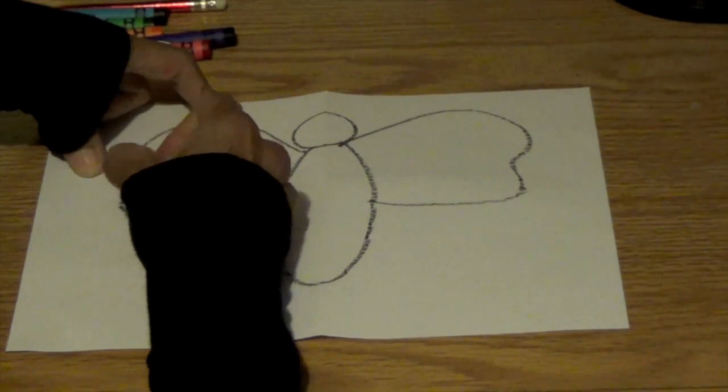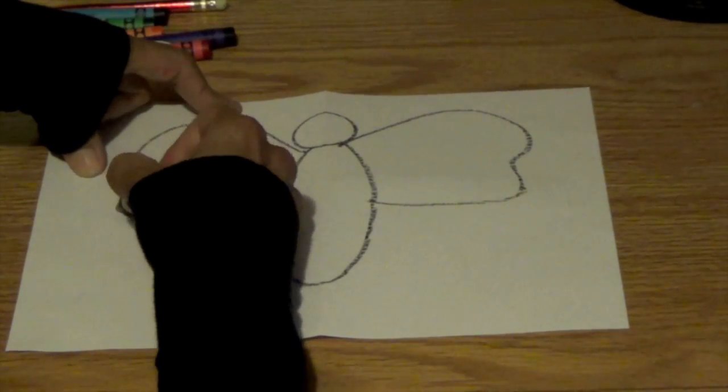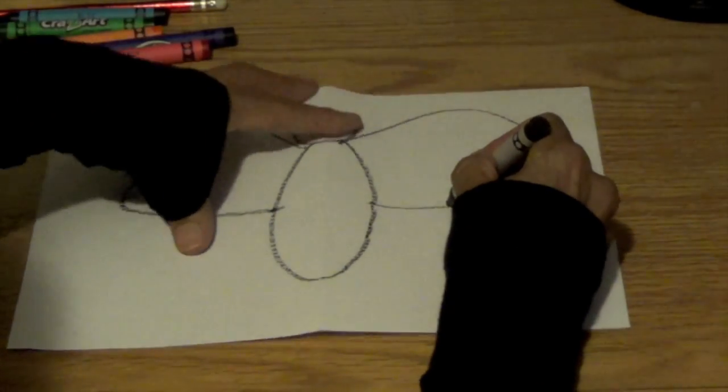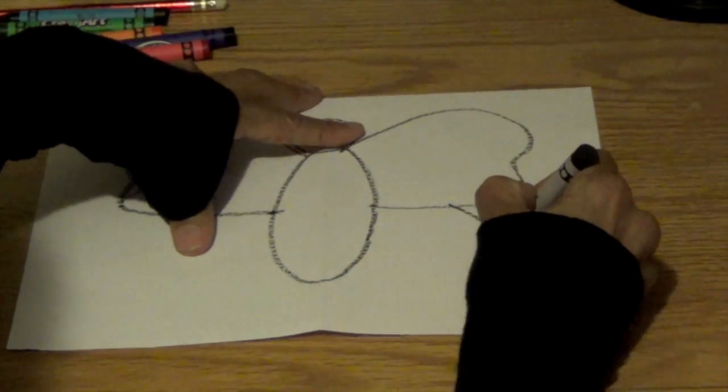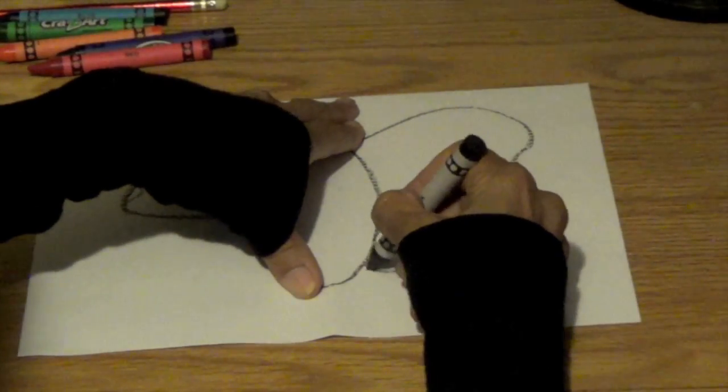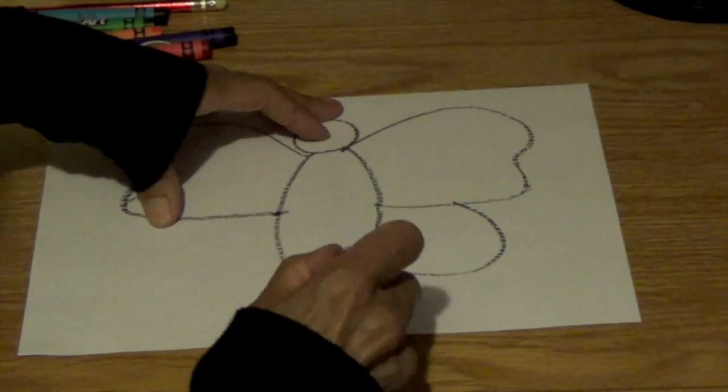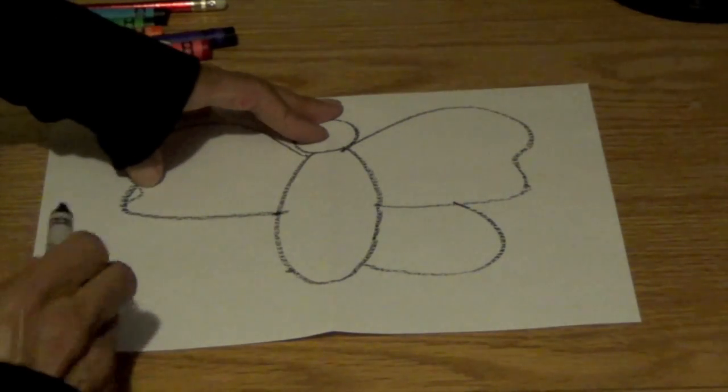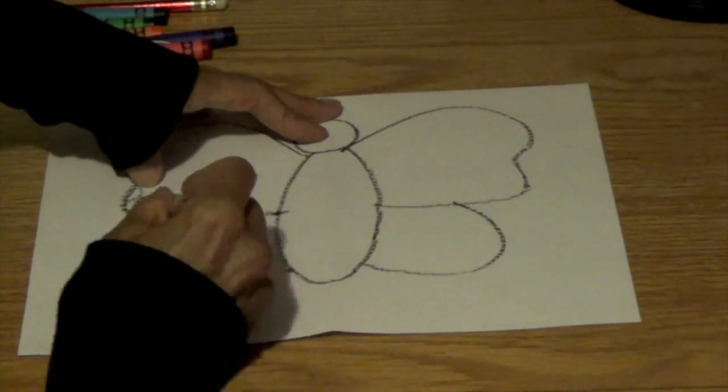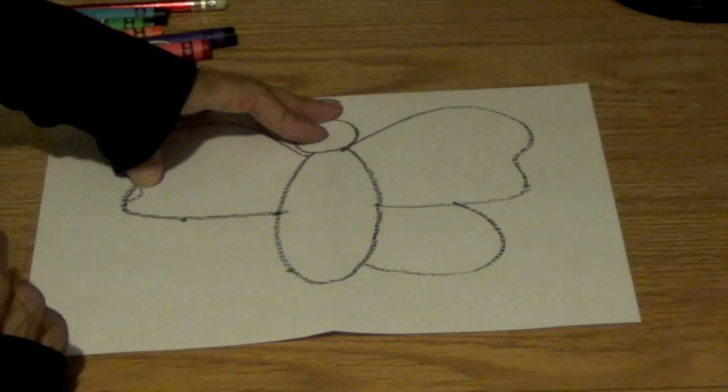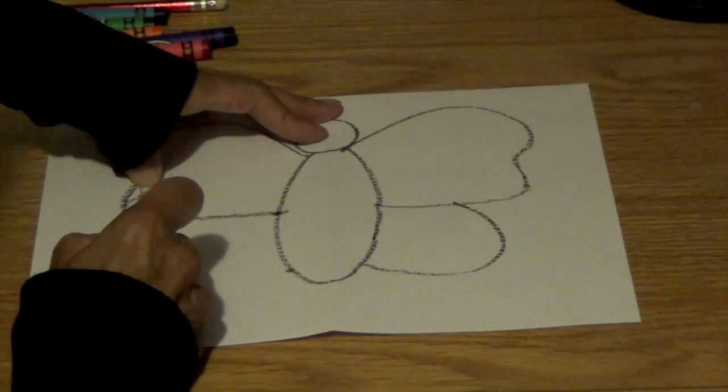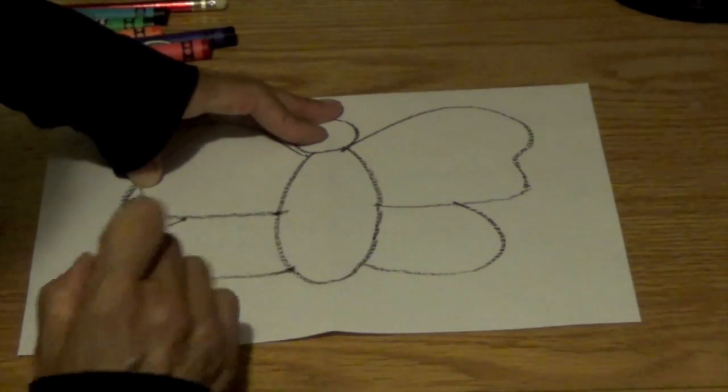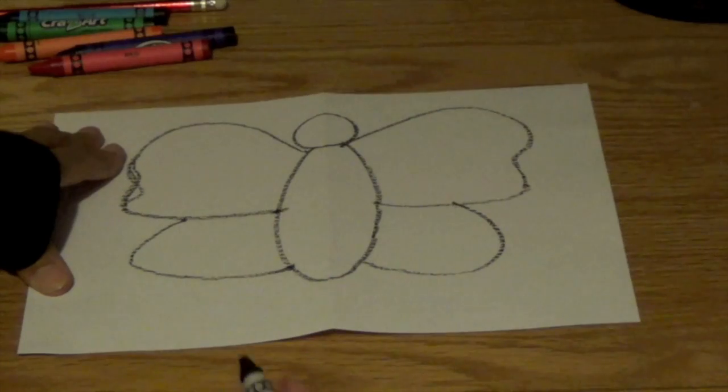See why you need an eraser? So you guys get your eraser. Erase if you have to. Then we're going to come here. Make another wing. I'm going to come across like this and put a little dot there so I know where it's going to stop. It doesn't look exactly the same but close.